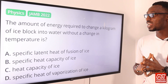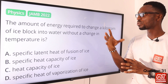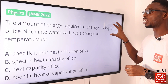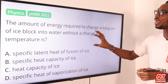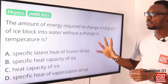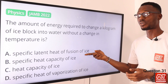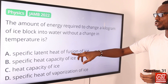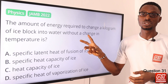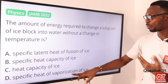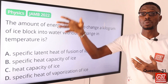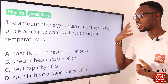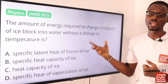Question 31. The amount of energy required to change a kilogram of ice block into water without a change in temperature is what? The keywords are unit mass and without a change in temperature — this is where specific latent heat of fusion comes in. We are changing a unit mass of solid into liquid without a change in temperature. For vaporization, specific latent heat of vaporization covers liquid into vapor. The correct option is option A — specific latent heat of fusion of ice.